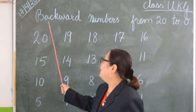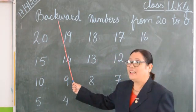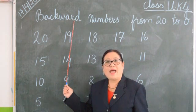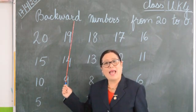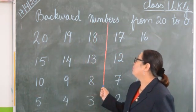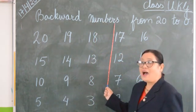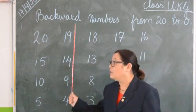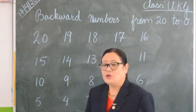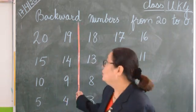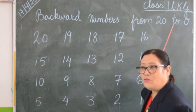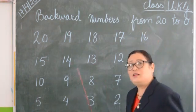B, A, C, K, W, A, R, D. Backward numbers. And backward numbers we are going to learn from 20 to 0. From 20 to 0. From 20 to 0 only we will learn.